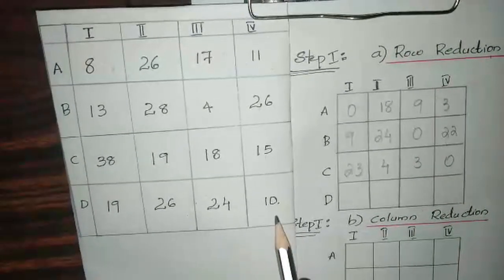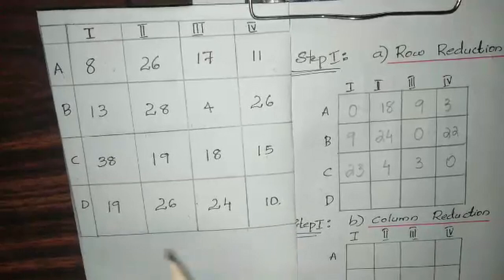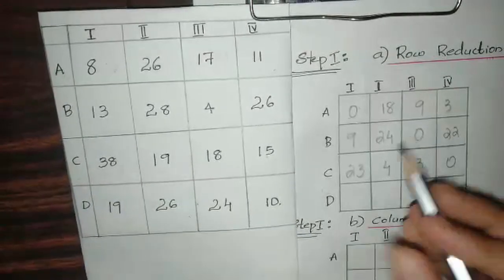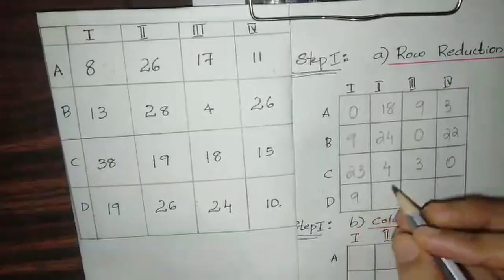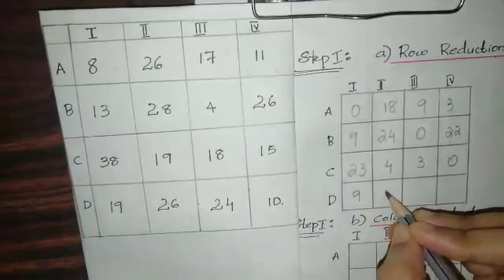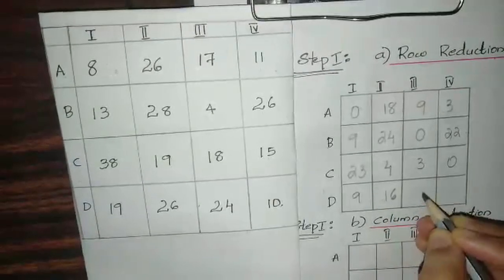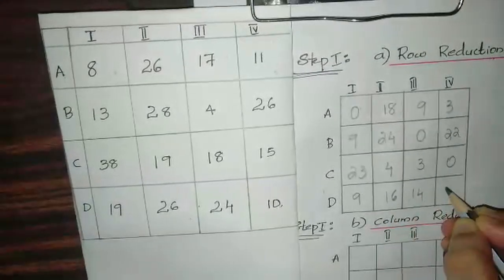For the fourth row, the minimum value is 10. So: 19−10=9, 26−10=16, 24−10=14, 10−10=0.